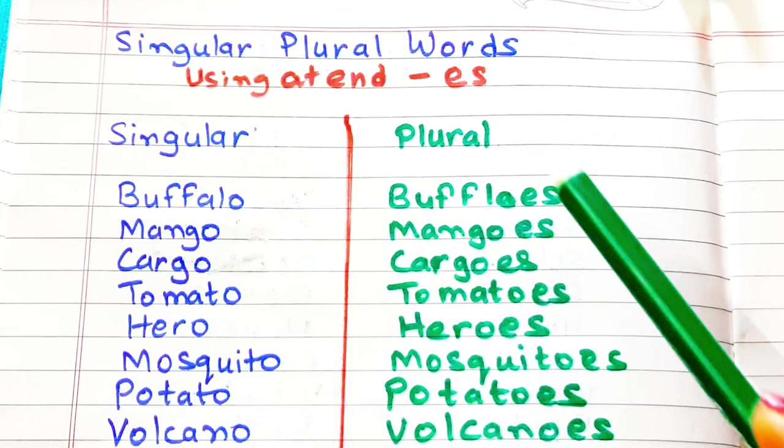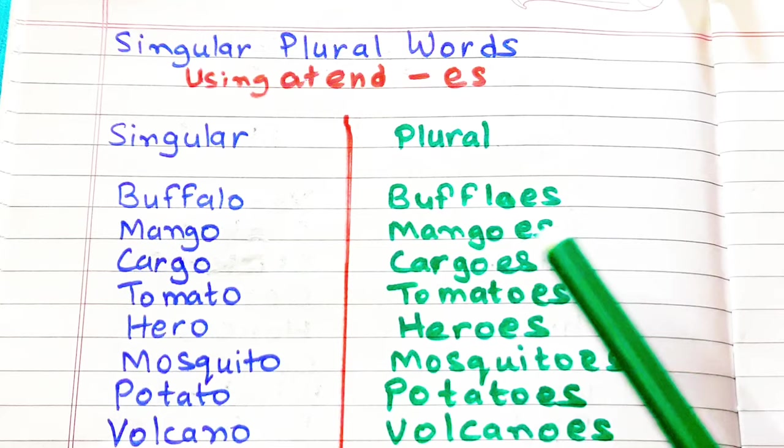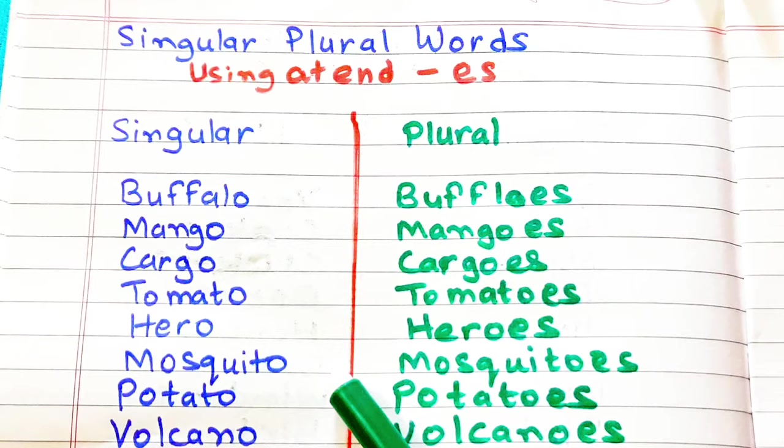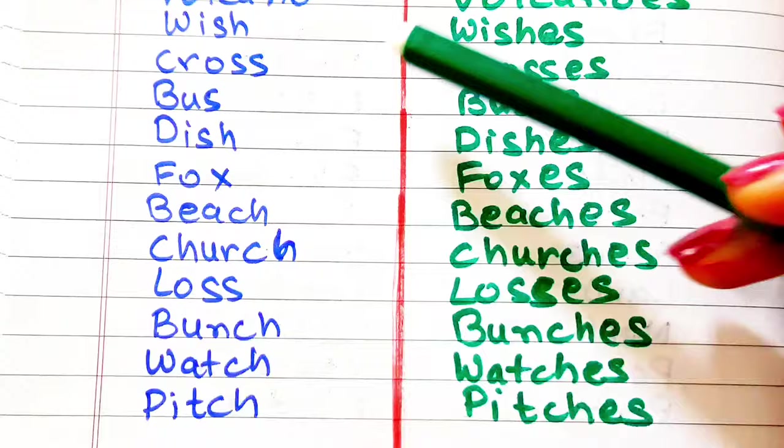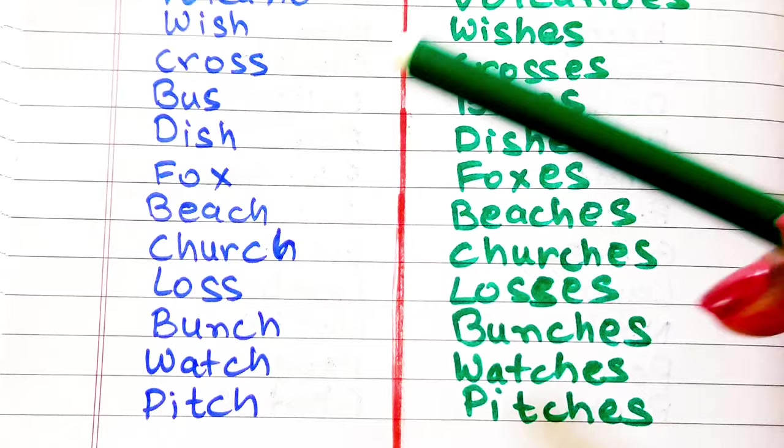Now we will see what are the singular words which are changed into plural by using es. Buffalo, buffaloes. Mango, mangoes. Cargo, cargoes. Tomato, tomatoes. Hero, heroes. Mosquito, mosquitoes. Potato, potatoes. Volcano, volcanoes. Wish, wishes. Cross, crosses. Bus, buses.